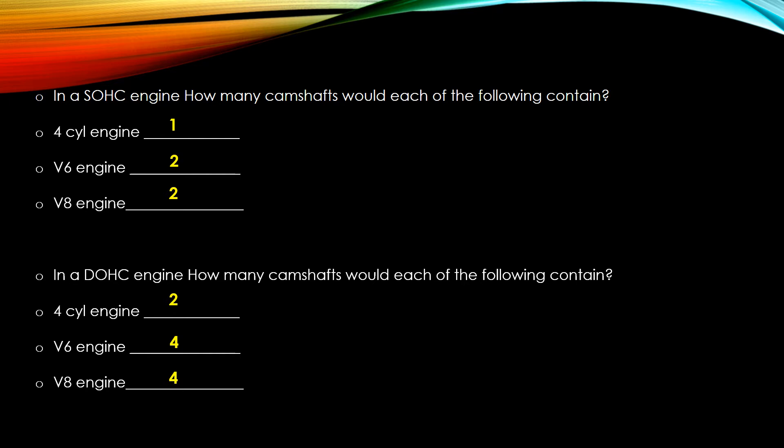In an overhead valve engine, the camshaft is in the block. Push rods push up through a passage and push the rocker arms, opening and closing the valves.